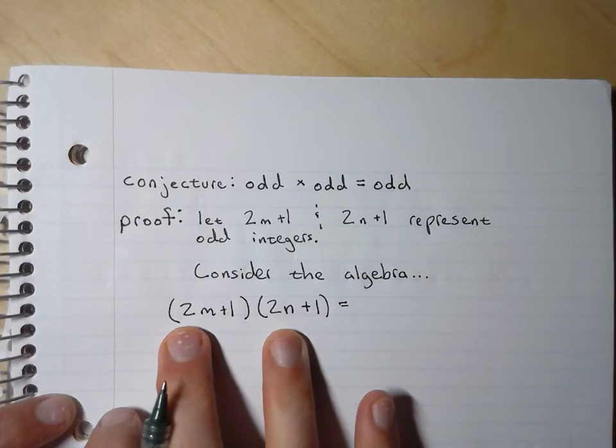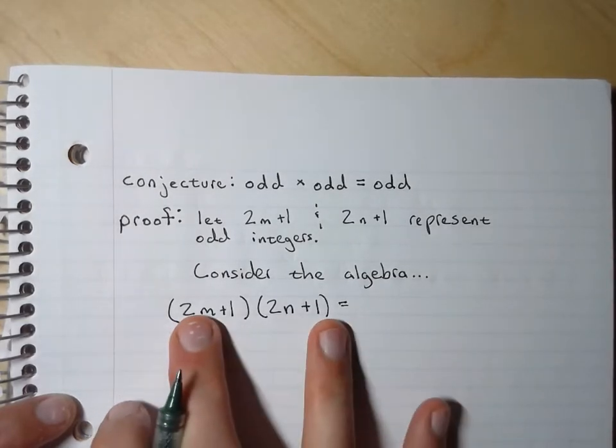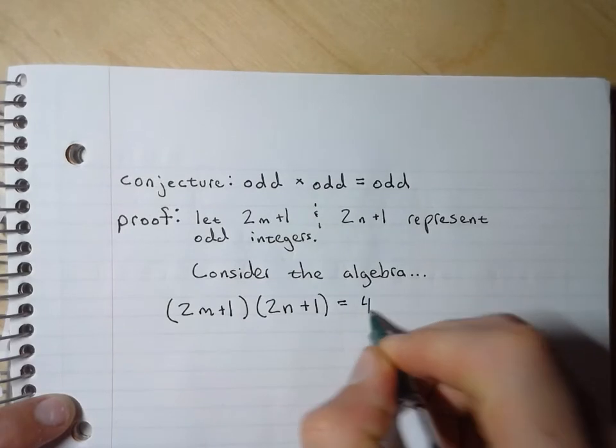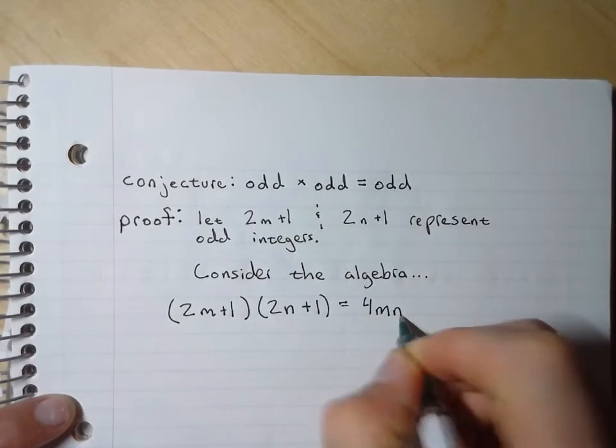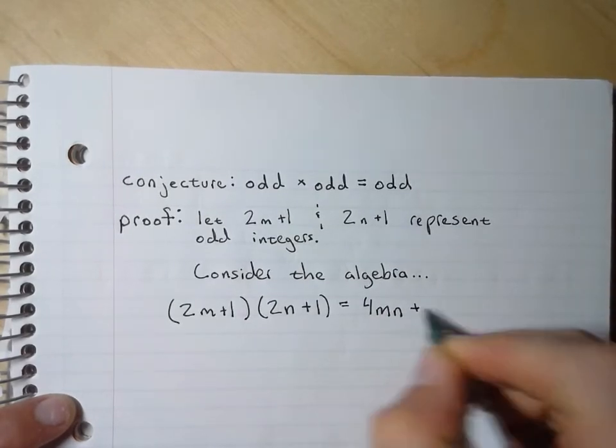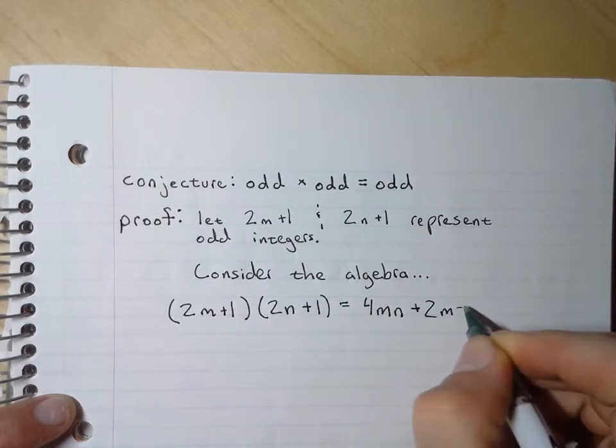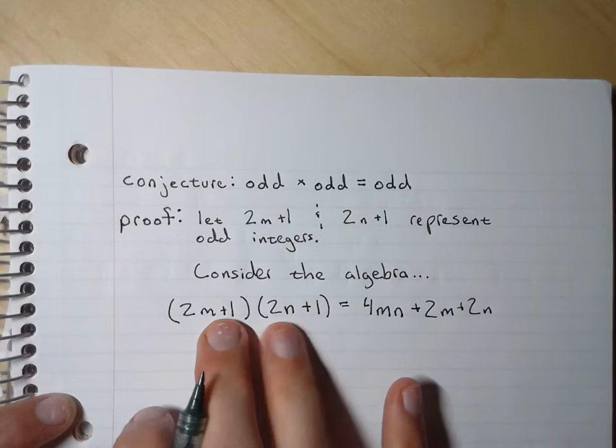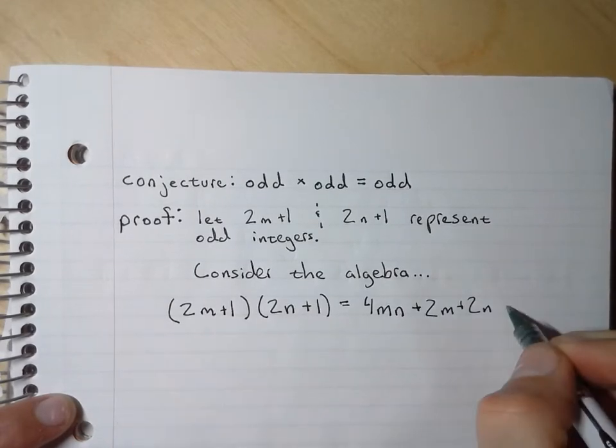Use FOIL - first, outer, inner, last. That's 4mn plus 2m plus 2n. Those middle terms are not going to combine in this case, plus 1.